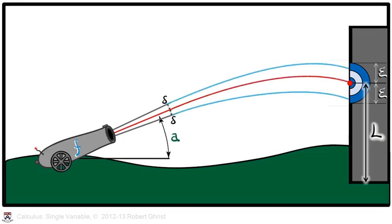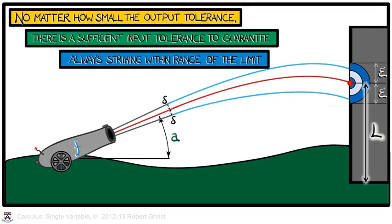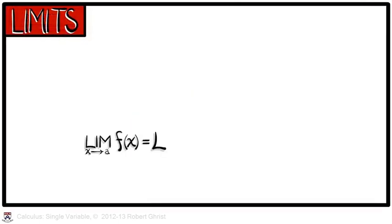In order to have the limit of f of x as x approaches a equals l, then anything within the input tolerance has to hit the target within the output tolerance. This must be true no matter how small the output tolerance epsilon is. You can find some sufficiently small input tolerance to guarantee always striking within range of the limit.